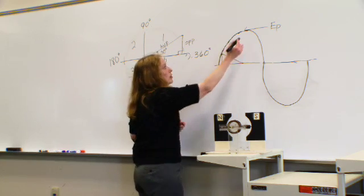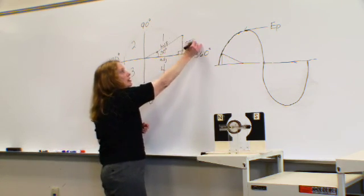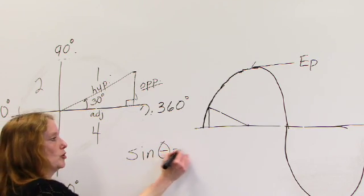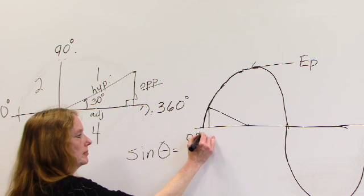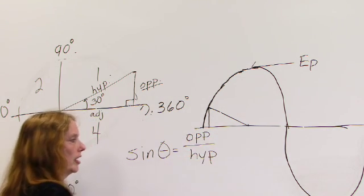So as we go through this peak point, that is representative of our hypotenuse. Here's our side adjacent. And as we know from the formula, sine of theta is equal to side opposite over hypotenuse.